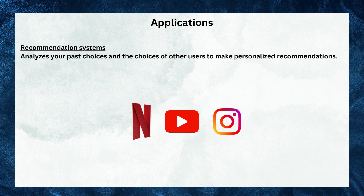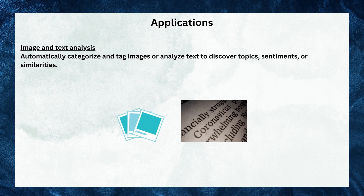Recommendation systems: Have you ever wondered how streaming platforms suggest movies or music you might like? Unsupervised learning algorithms analyze your past choices and the choices of other users to make personalized recommendations. Image and text analysis: Unsupervised learning can automatically categorize and tag images, or analyze text to discover topics, sentiment or similarities. These are just a few examples of how unsupervised learning makes a difference in various industries.